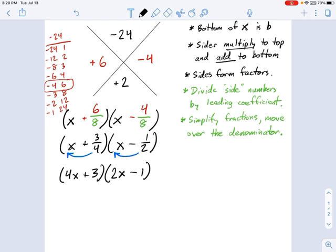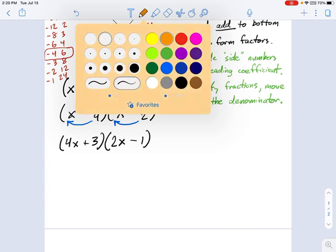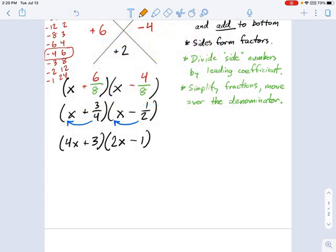There's algebra reasons why this works, which would also push this into like a 15 minute long video, so we're not going to get into that. One thing I just want to do at the end is double check our work. It's always a good idea to double check and just make sure you did everything right. So 4X times 2X is going to be 8X squared.